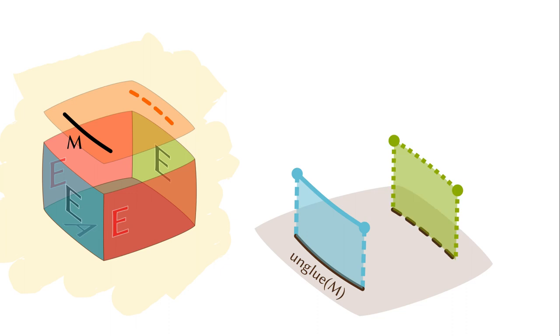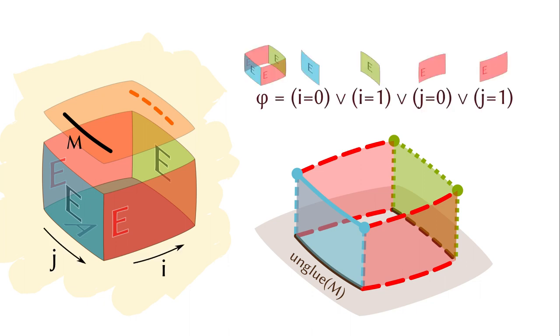What you want is a similar combination on the other side. Moreover, each part of the coercion should agree with the coercion in each part of the glue type. The parts that support the coercion are the equivalences in parallel with the coercion dimension. We can describe the shape of glue by the logical expression phi, that is the disjunction of i equals to 0, i equals to 1, j equals to 0, and j equals to 1.